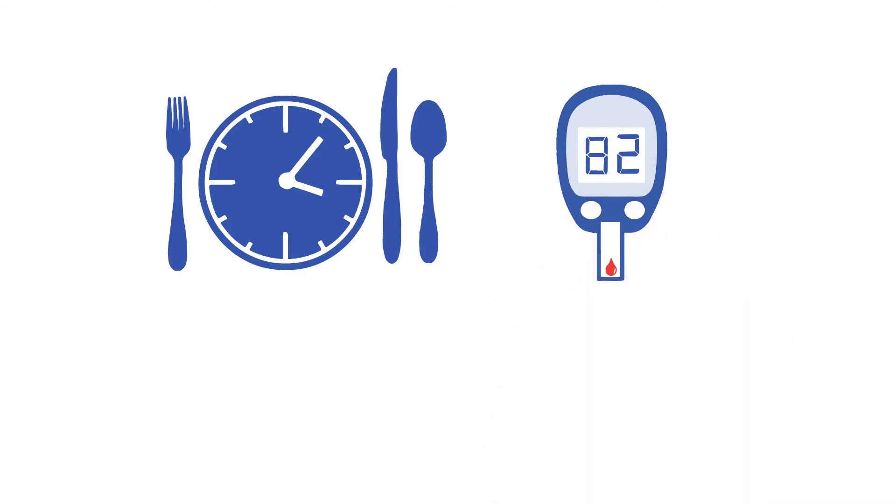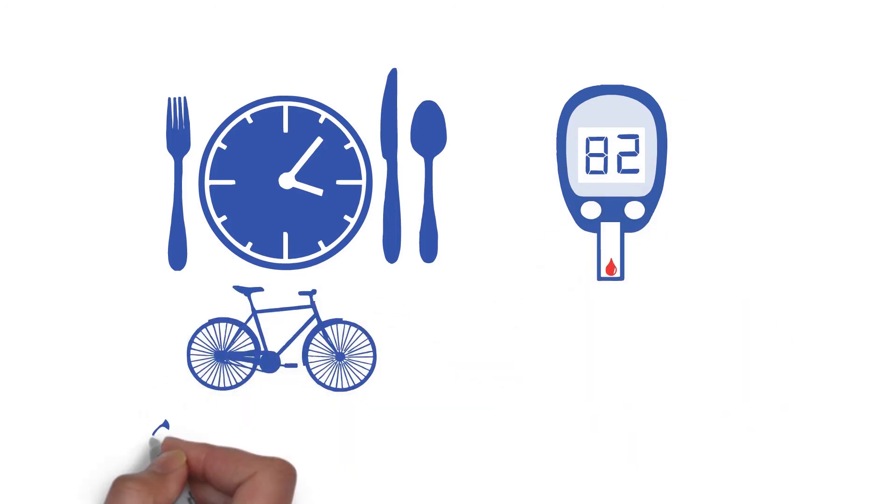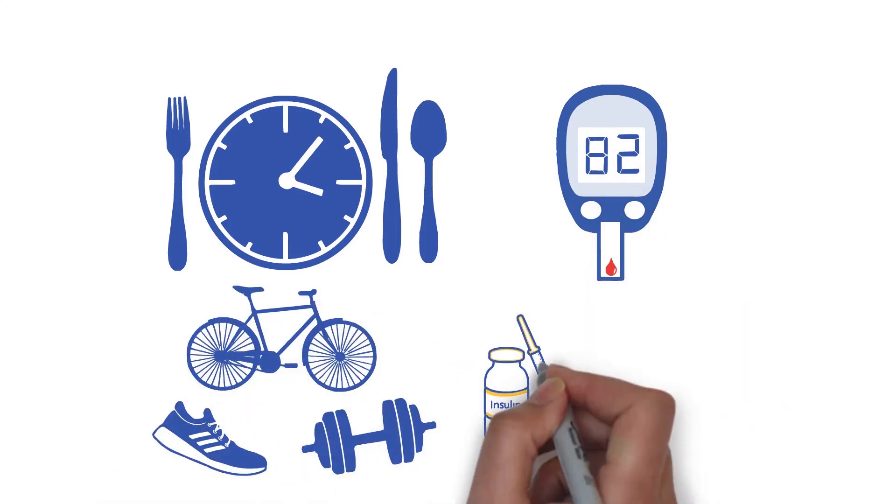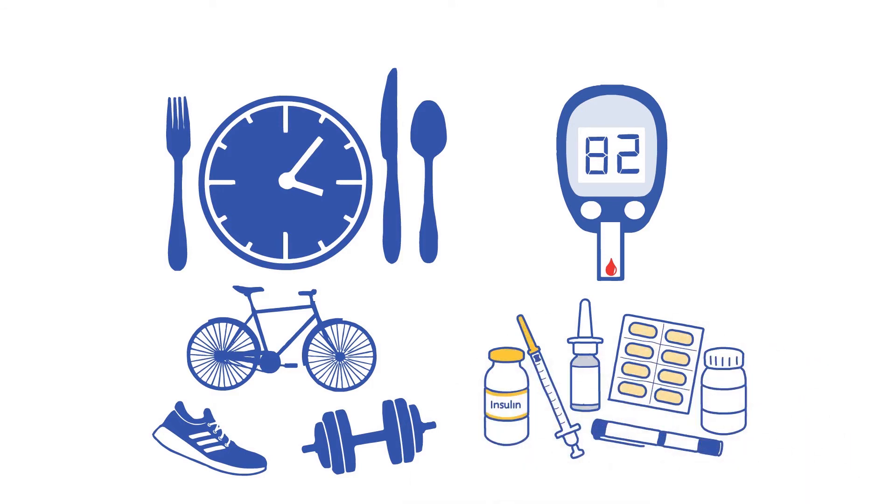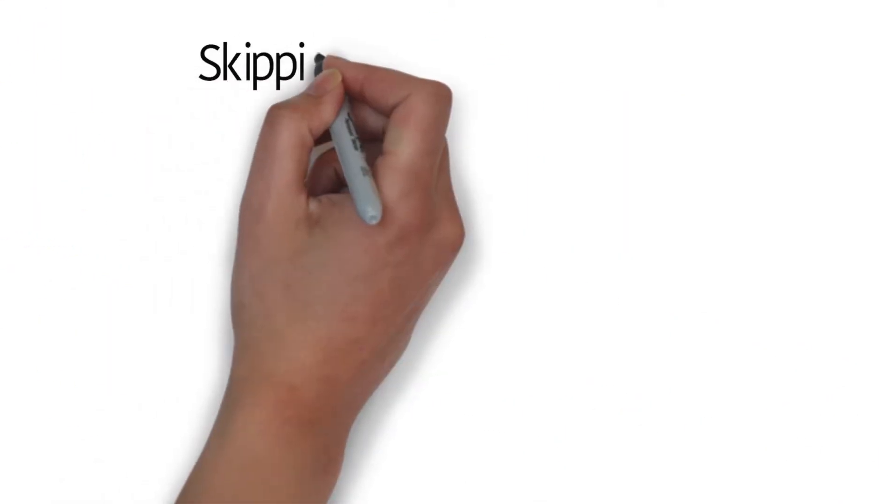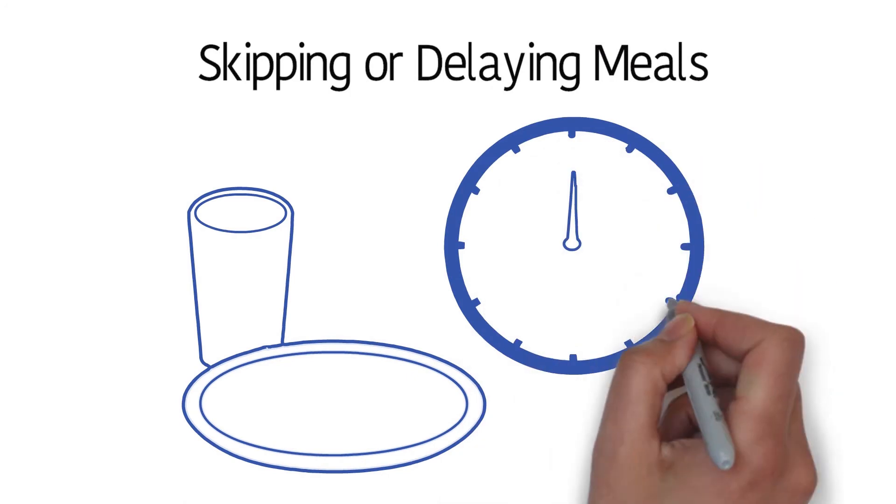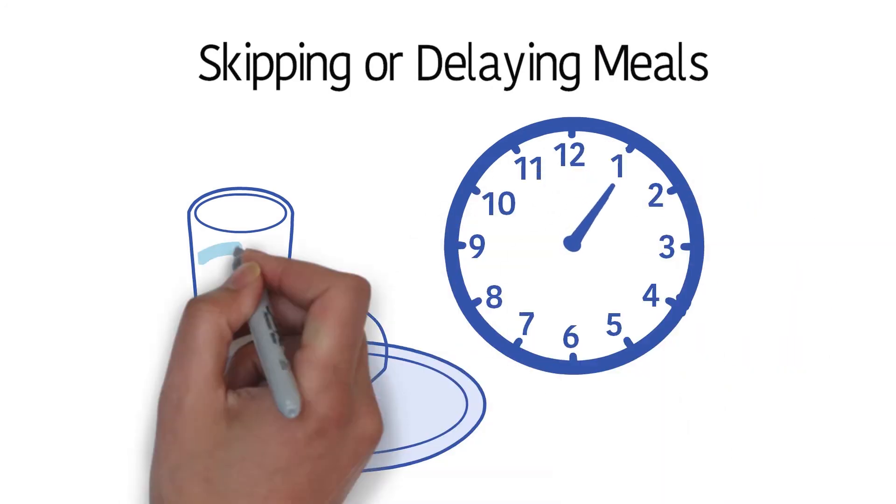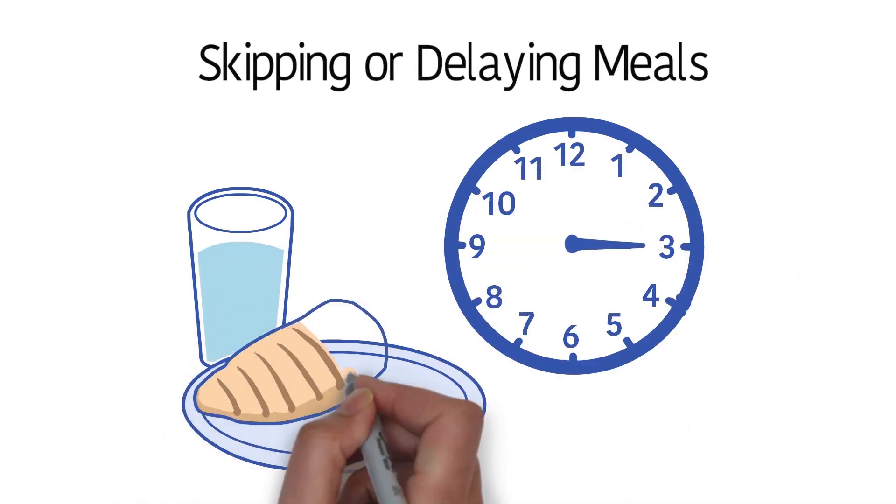To prevent hypoglycemia: eat regular meals and snacks, test your blood sugar often, follow the exercise plan from your diabetes provider, and take your diabetes medicine as directed. Putting off eating or skipping a meal can lead to hypoglycemia, and waiting to eat later in the day can lead to overeating and high blood sugar. Follow your diet plan.